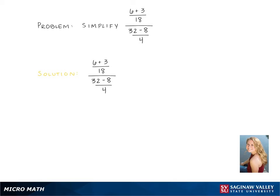Here we are simplifying the complex fraction 6 plus 3 over 18 divided by 32 minus 8 over 4.